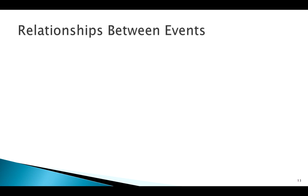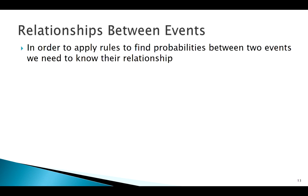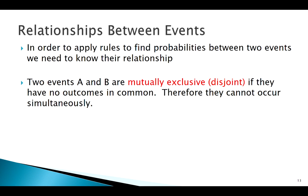For more complicated situations with multiple events, the first thing to consider is the relationship between those events. The first relationship to look for is whether two events are mutually exclusive — also called disjoint. Two events that are mutually exclusive or disjoint share no common outcomes; they can't happen at the same time. Maybe one prevents the other from happening, but these are two events that cannot occur simultaneously.